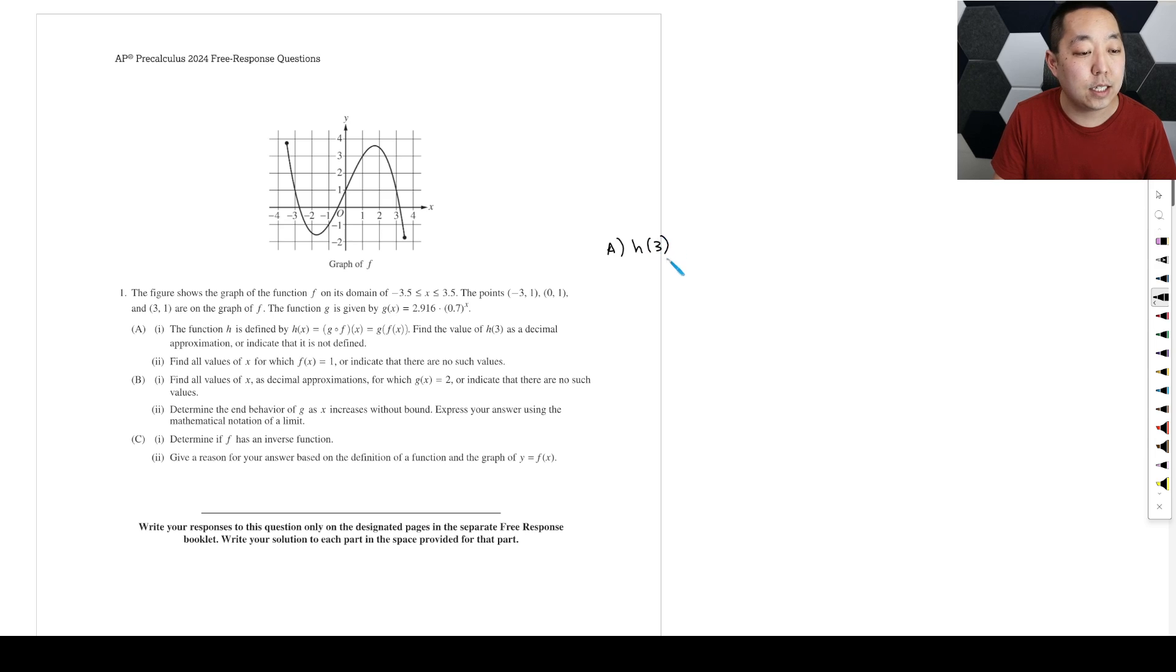So H of 3 as a decimal approximation or indicate that it is not defined. So H of 3, we're really going to replace all the Xs with 3. So just think about this guy. I prefer this notation. So you just replace the X with 3. So that's G of F of 3. And then how do we calculate F of 3? Well, we have a graph of F. And so what we want to look at is F of 3, what the Y value is, because that's the value of the function. So the Y value is 1, right? So you replace that F of 3 with 1.